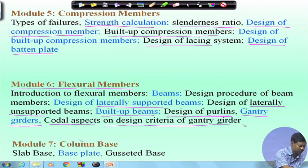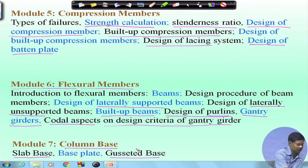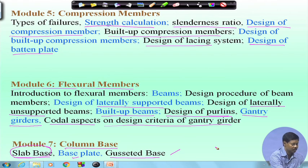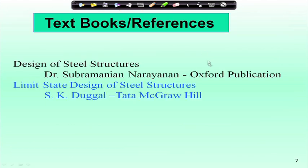The last module covers column bases, through which loads from the superstructure are transferred to the ground. Two types are discussed: slab base (for concentric, lighter loads) and gusset base (for heavy or eccentric loads). Design of the base plate under concentric and eccentric loading will also be covered.